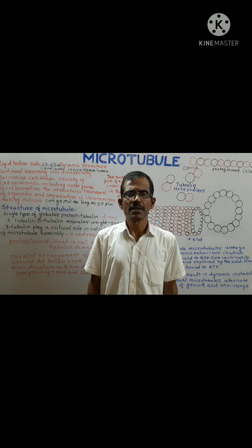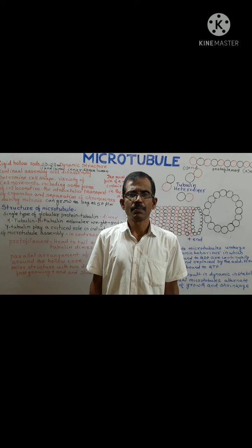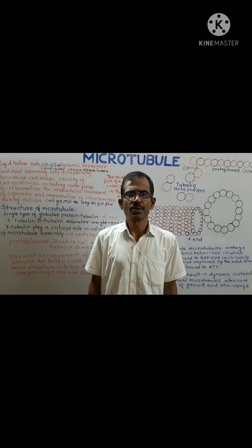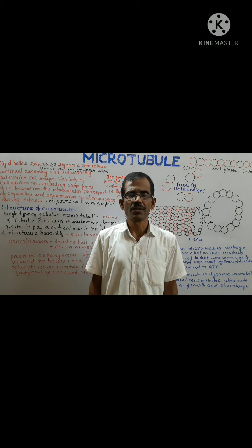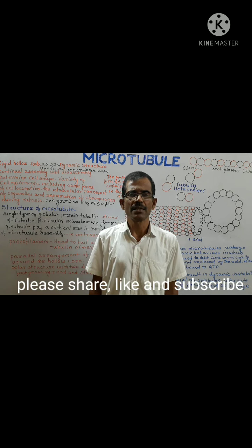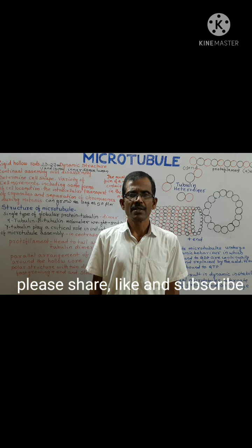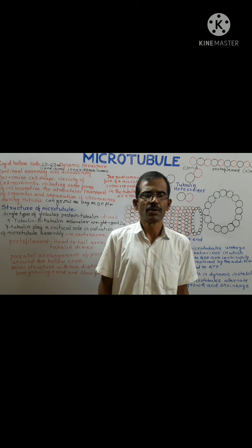Today we shall discuss about microtubules. Microtubules are the principal components of cytoskeleton. They are dynamic structures because they undergo continual assembly and disassembly within the cell.